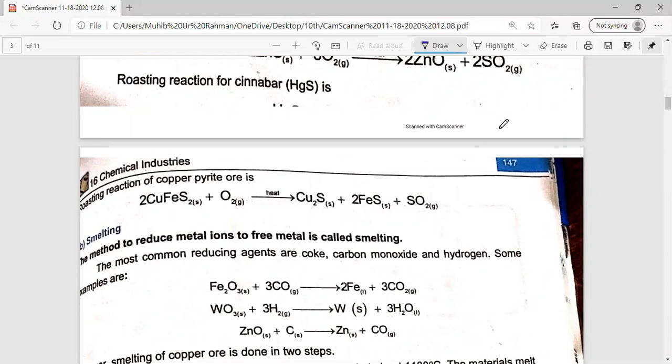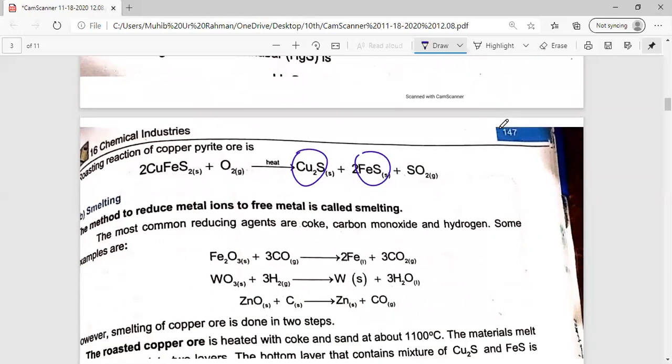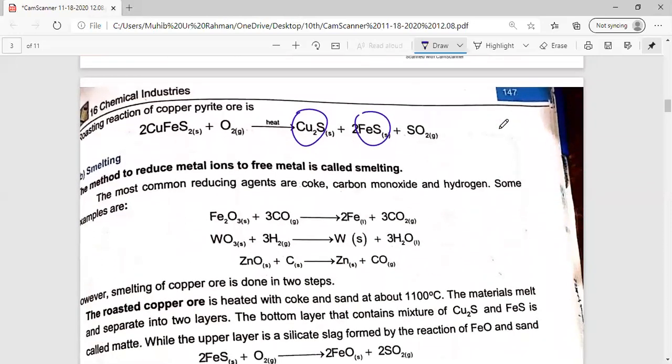This is not completely converted in the oxide form. We convert it in copper sulfide and iron sulfide. We separate it and extract it. The next step is smelting.